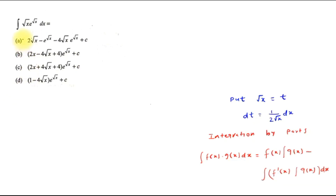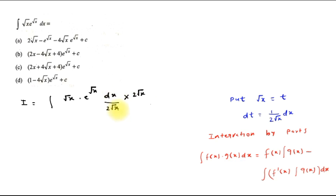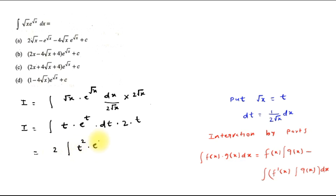Hello dear student, this is your question. Here we have to find the integration of √x · e^(√x) dx. First we write I as the integral of √x · e^(√x) dx. Assuming √x equal to t and differentiating gives dt equal to 1/(2√x) dx. Substituting, √x is t and dx/(2√x) equals dt so dx equals 2√x dt equals 2t dt. The overall integration becomes 2 times the integral of t² · e^t dt.